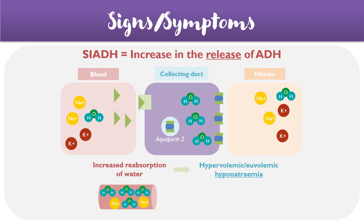This leads to the symptoms of SIADH, which can include nausea and vomiting, cramps and tremors, or confusion and irritability, due to the imbalance of water and sodium.